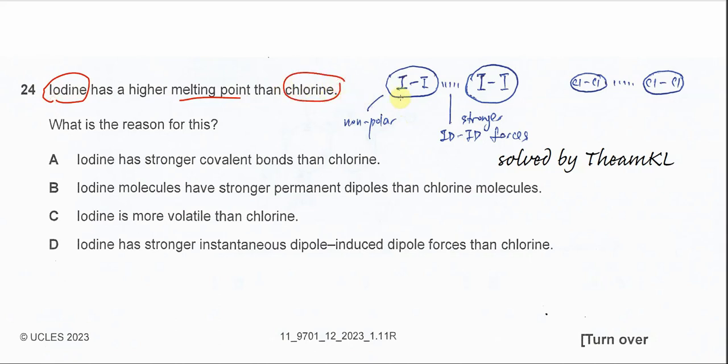So iodine and chlorine are non-polar molecules because their electronegativity is the same. So it's non-polar, no dipoles there, no net dipoles.